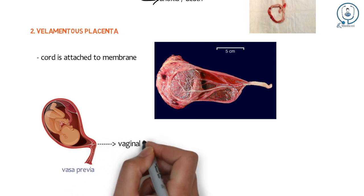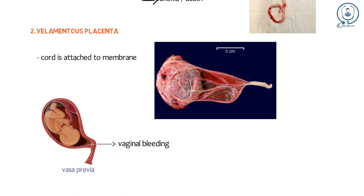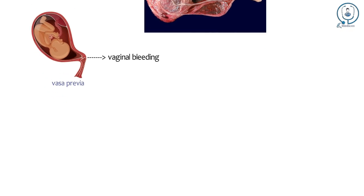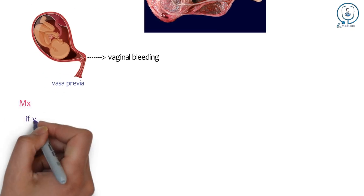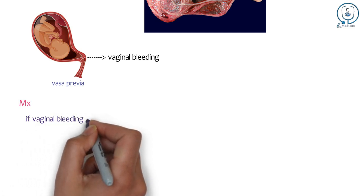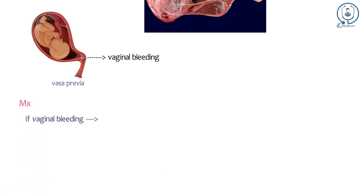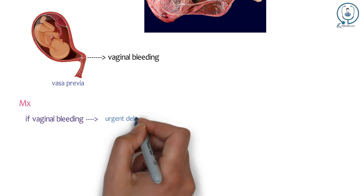Here, if the rupture of membrane involves overlying vessels, this leads to vaginal bleeding. As it is entirely fetal blood, this may be fatal. Management: In presence of fetal bleeding, urgent delivery is essential.